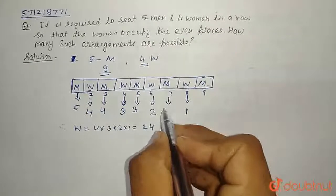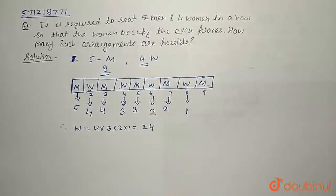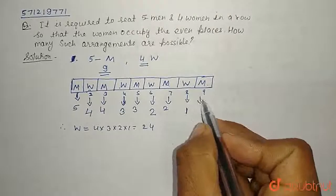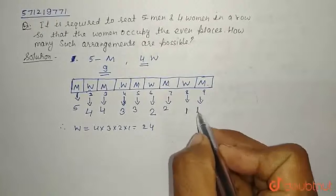Now 3 men are already seated, so the 7th place can be filled with 2 remaining men. So hence we have left with only 1 man. Therefore the 9th place can be filled with only 1 man.